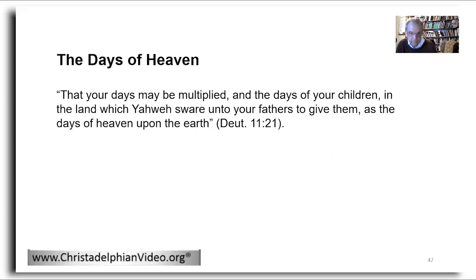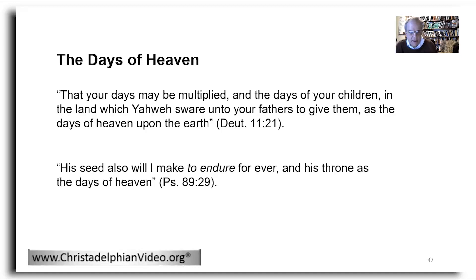In Deuteronomy 11:21 we read: 'that your days may be multiplied, and the days of your children in the land... as the days of heaven upon the earth.' And Psalm 89 says 'his throne as the days of heaven.' How long is a day of heaven relative to earth days? It's not revealed, but these verses show that such days exist, and would have existed presumably even before the earth was created. So in that sense, day one in Genesis 1 was not the first day.